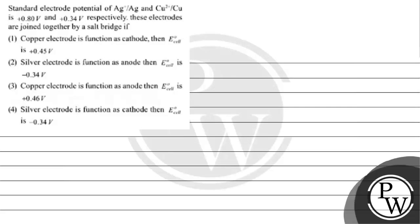Hello, let's read this question. The question says standard electrode potential of Ag⁺/Ag and Cu²⁺/Cu is 0.80 volt and +0.34 volt respectively. These electrodes are joined together by a salt bridge.